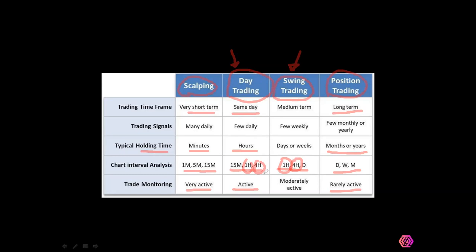The good thing about these time frames is you don't have to check the market all the time. If you're using four hours, you check at every four-hour interval. Trading doesn't have to be difficult — most times traders want to make a million dollars overnight, and that is not possible. You're trying to make too much money in a short period of time, and you are asking for trouble.